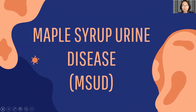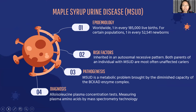The fourth disorder is maple syrup urine disease, or MSUD. MSUD is an inborn error of metabolism caused by defects in the branched-chain alpha-keto acid dehydrogenase complex (BCKAD), which results in elevations of branched-chain amino acids and plasma alpha-keto acids in urine, and production of the pathognomonic disease marker alloisoleucine. It is a rare metabolic disorder with a prevalence of one in every 185,000 live births, and in certain populations possibly one in every 52,541 newborns. It is an autosomal recessive disorder; when two carrier parents reproduce, there is a 25% chance any child will have MSUD.